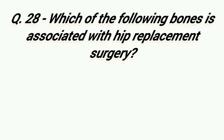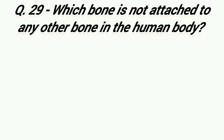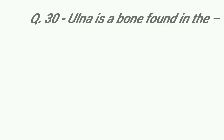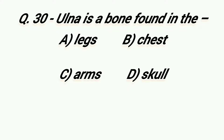Which of the following bones is associated with hip replacement surgery? Option A: Fratelli, Option B: Sternum, Option C: Femur, Option D: Fibula. Right answer is Option C, Femur. Which bone is not attached to any other bone in the human body? Option A: Stapes, Option B: Patella, Option C: Hyoid, Option D: Scapula. Right answer is Option C, Hyoid. Ulna is a bone found in the: Option A: Legs, Option B: Chest, Option C: Arms, Option D: Skull. Right answer is Option C, Arms. Alright.